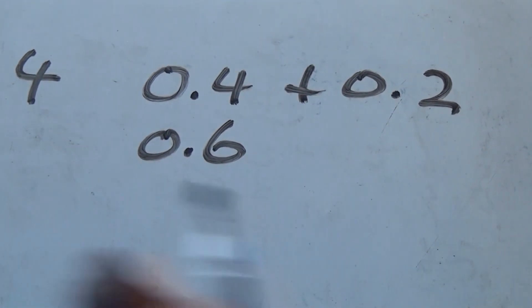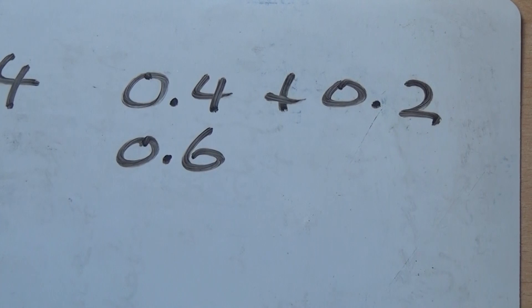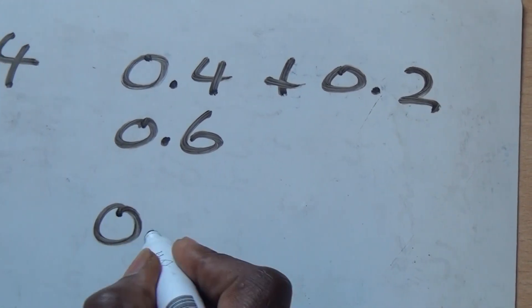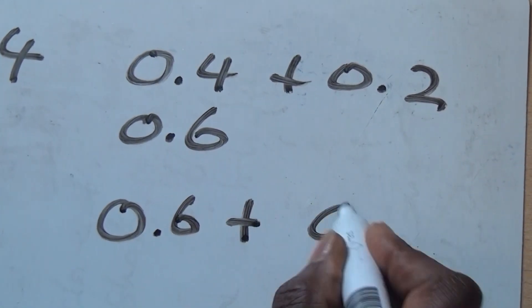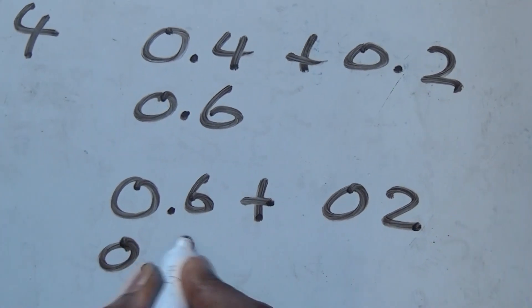The pattern continues. To get the next one, you need to add 0.2 to 0.6, which will give us 0.8.